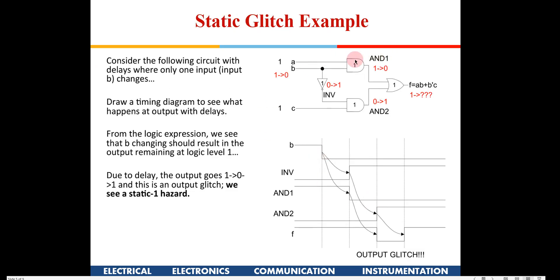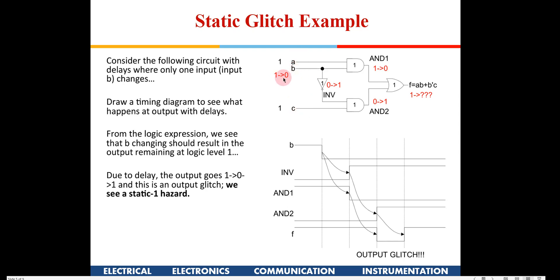To illustrate the cause, consider a function implemented with two AND gates and an OR gate. One AND gate computes AB, the other computes B'C using an inverter. Suppose initially A=1, B=1, C=1, so the output is one. Now A and C remain one while B is toggling — changing from one to zero.